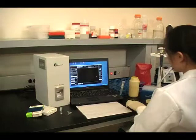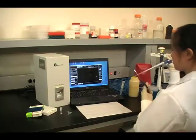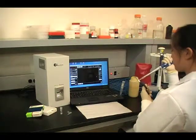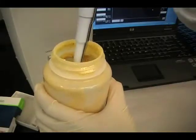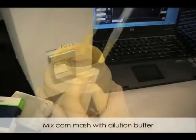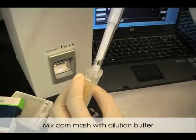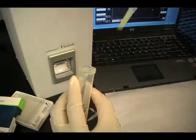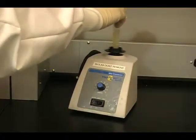The front end of a pipette tip is cut off to better handle highly viscous corn mash samples. Corn mash is first mixed with a dilution buffer. Vortexing provides further mixing.